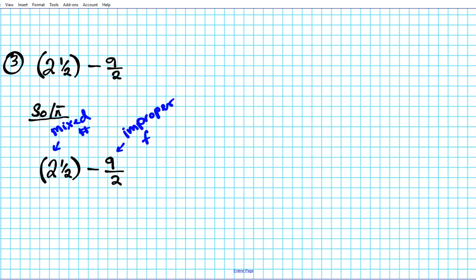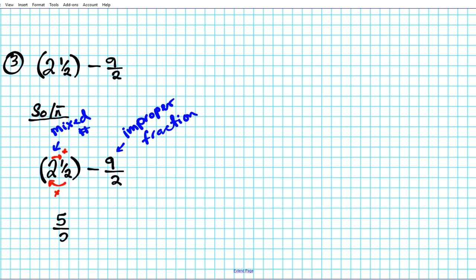If you have a situation like this you cannot add or subtract — remember, the fractions you're adding should be proper or improper fractions. But we have a mixed number, so this mixed number has to be converted into an improper fraction. To do that, we multiply two by two and add one, then divide by two. Two times two is four, plus one is five, so we have five over two minus nine over two. Now we have two improper fractions and we may subtract.